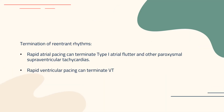Another therapeutic use would be termination of reentrant rhythms. Rapid atrial pacing can terminate type 1 atrial flutter and other paroxysmal supraventricular tachycardias, and rapid ventricular pacing can terminate VT. Obviously, in these circumstances it would be a very short-term use of pacing, but nonetheless can be very useful.